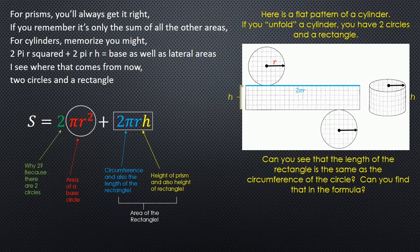For cylinders, memorize you might: 2πr² + 2πrh equals base as well as the lateral area. I see where that comes from now - two circles and a rectangle.